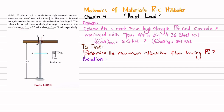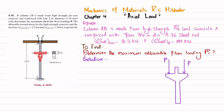The allowable normal stresses for high-strength concrete and steel rods are given respectively. You can see this column AB is made of a concrete portion as well as four steel rods embedded in the concrete. To find the floor loading P, we cut the column at any cross-section and draw the free body diagram. There will be a reaction force — the load taken by concrete which is P_concrete, and the load taken by the steel rods which is P_steel.